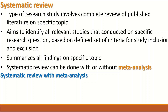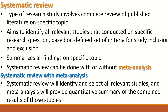If done with meta-analysis, the systematic review will pull out all relevant studies — independent research studies that address the same scientific question or aims — and perform a meta-analysis, which provides a quantitative summary with statistical analysis of all the combined study results. The systematic review performs the literature search and summarizes the findings.